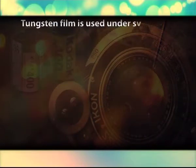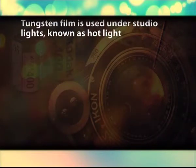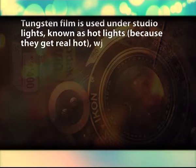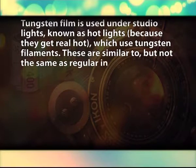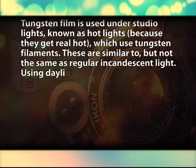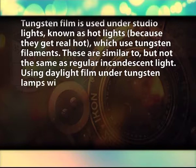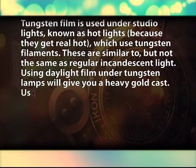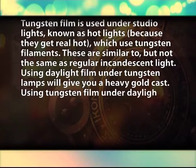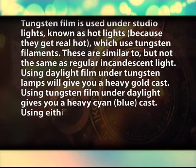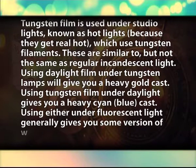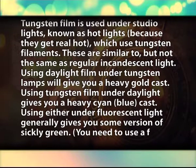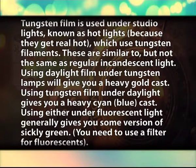Tungsten film is used under studio lights — known as hot lights because they get very hot — which use tungsten filaments. These are similar to, but not the same as, regular incandescent light. Using daylight film under tungsten lamps will give you a heavy gold cast. Using tungsten film under daylight gives you a heavy cyan blue cast. Using either under fluorescent light generally gives you some version of sickly green; you need to use a filter for fluorescence.